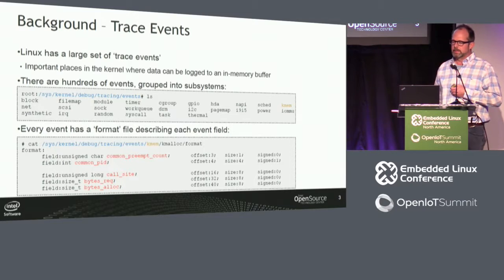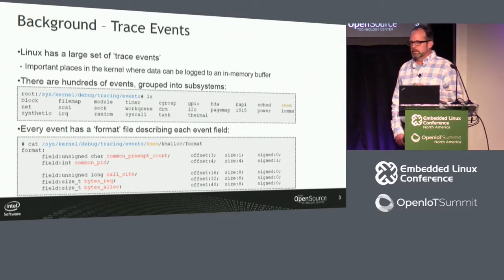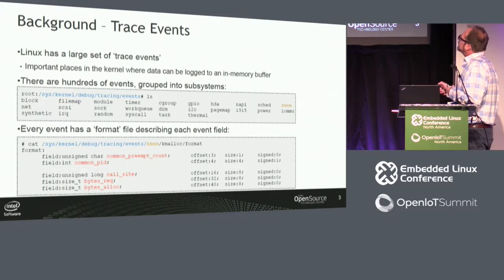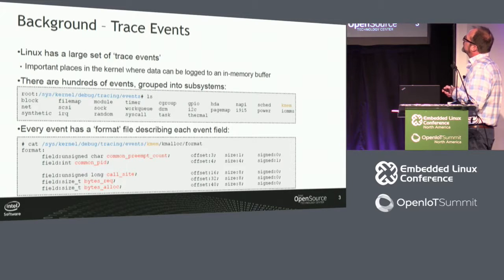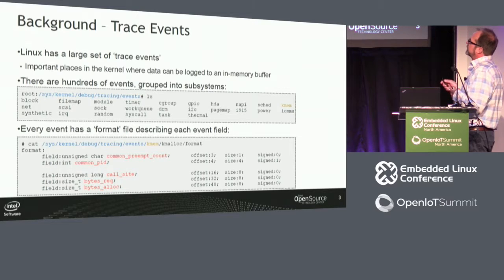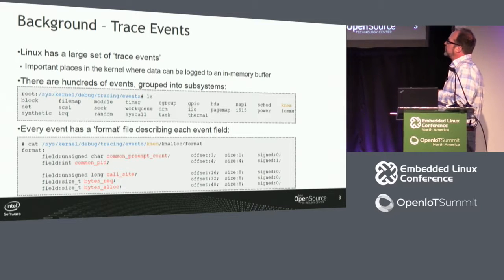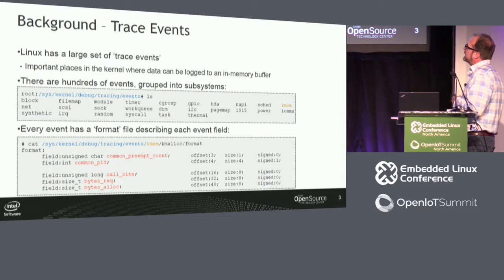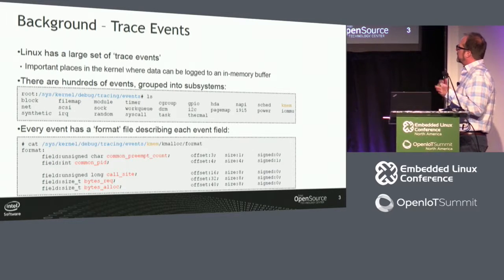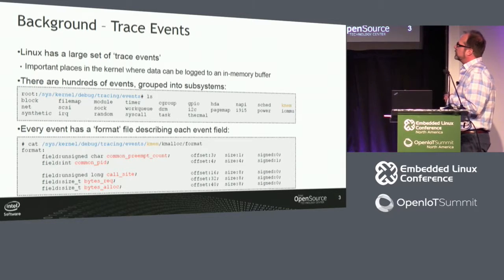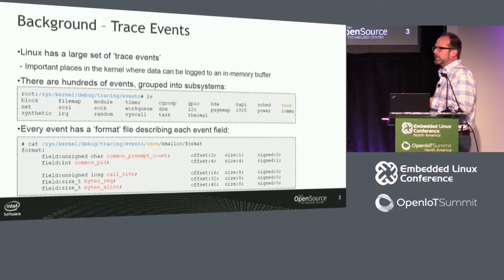There are hundreds of these trace events scattered throughout the kernel, and they're grouped into subsystems to make things manageable. This is a small subset of them. If you go and look in debugFS, traceFS, under the tracing/events subdirectory, you'll see the whole set. Each subsystem is a subdirectory, which in turn contains subdirectories corresponding to the trace events themselves.